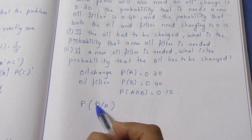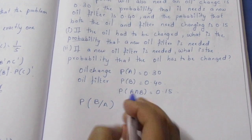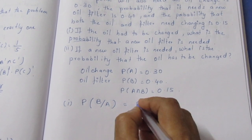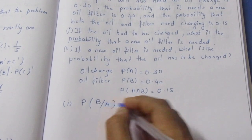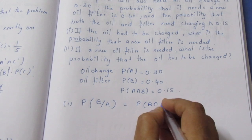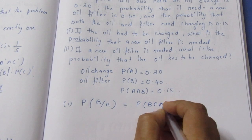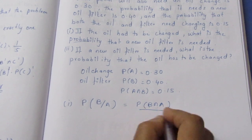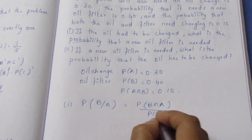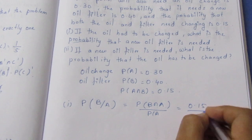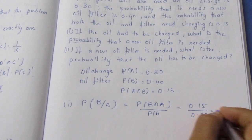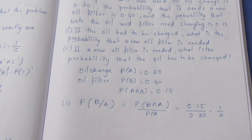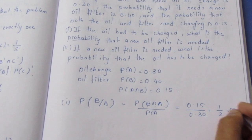Oil filter means B given A. This is the first part. Using the conditional probability formula: P(B|A) = P(B intersection A) divided by P(A). That gives us 0.15 divided by 0.30, which equals 1 by 2, or 0.5.